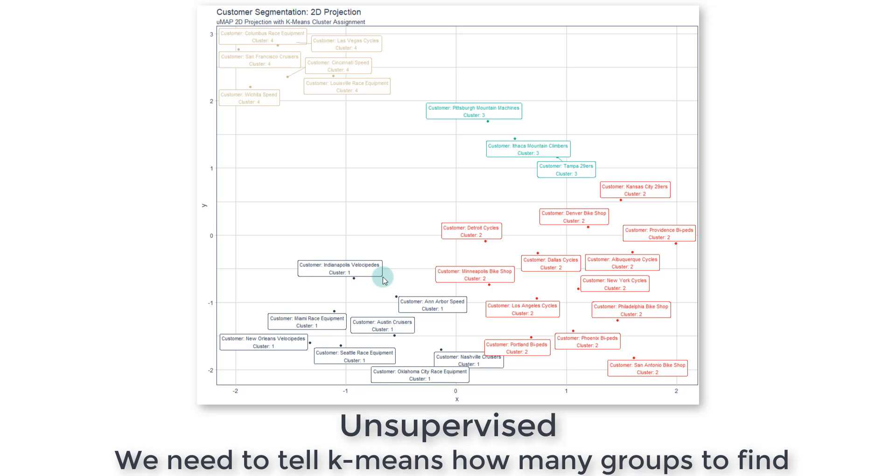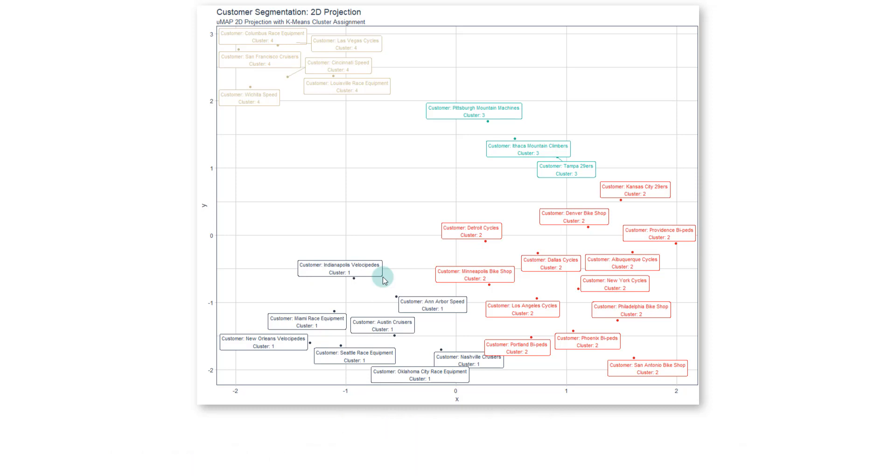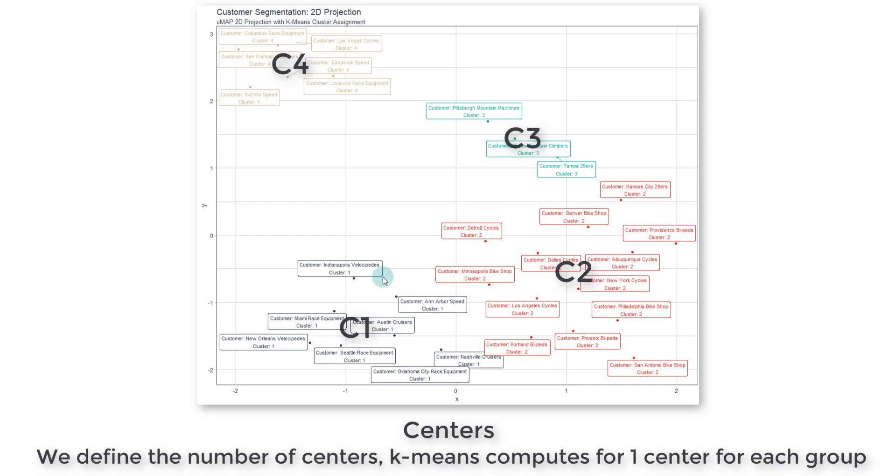So what we're going to be doing is we're going to be providing K-Means some information. We're going to say one, two, three, four, et cetera, all the way up to, say, 15 groups. And we're going to try and figure out which is the best group using some parameters that the K-Means algorithm will compute for us. So here we have four, which is what we'll end up with, but we're going to be trying out many different centers.